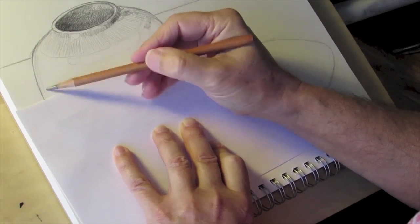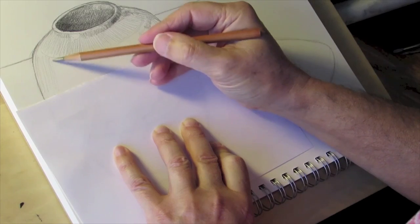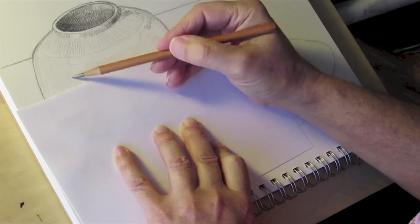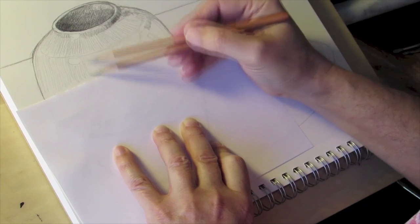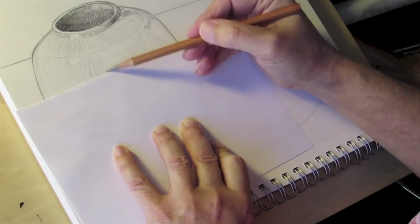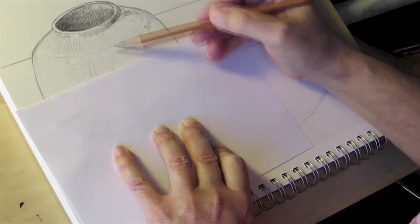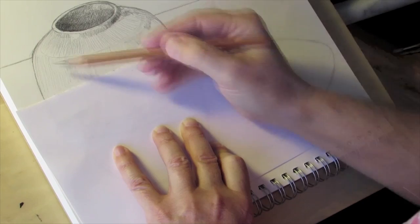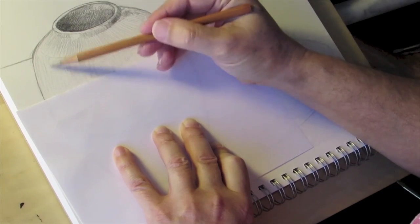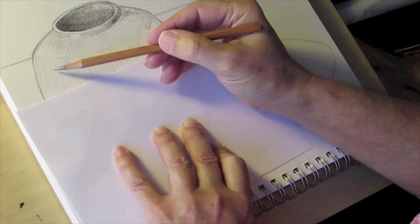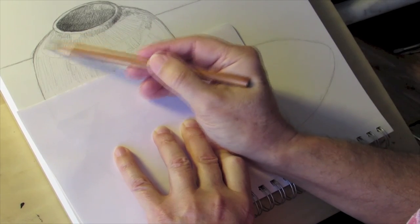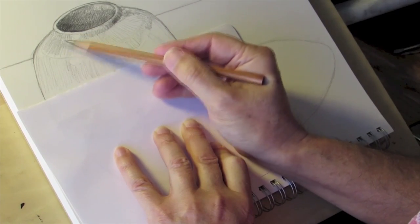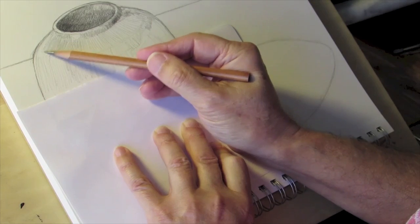Coming down into this area again, I want to reserve the white of the paper only for that area that's highlighted. As I introduce this tone, I notice in the pot that this area is slightly lighter than this area. So I also come back in and bring that up just a little bit.